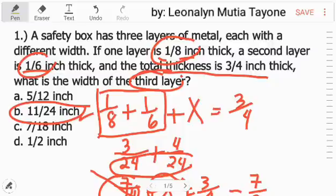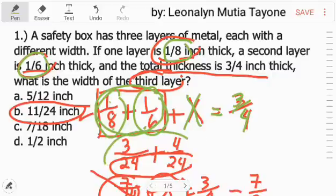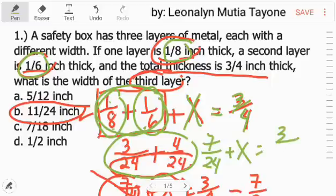Let me repeat for those who are confused. This is the first layer which is 1/8. Let's add the second layer which is 1/6. The third layer, let x be that third layer which we don't know. Then, the total is 3 fourth. First, to add fractions, the denominators must be the same. So the denominators here is 24, the least common denominator. To have a denominator of 24, the equivalent of 1/8 is 3 over 24. The equivalent of 1/6 is 4 over 24. So the total of this is 7 over 24.